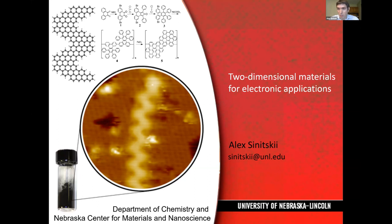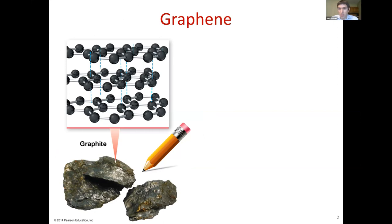Whatever research topic you're working on, it's most likely that some two-dimensional materials could be helpful. So, starting from the basics — the story of graphene. There is a well-known graphite crystal, found everywhere including pencil leads. If you look at its structure, it consists of two-dimensional layers with very strong bonding between carbon atoms but very weak interaction between the layers.